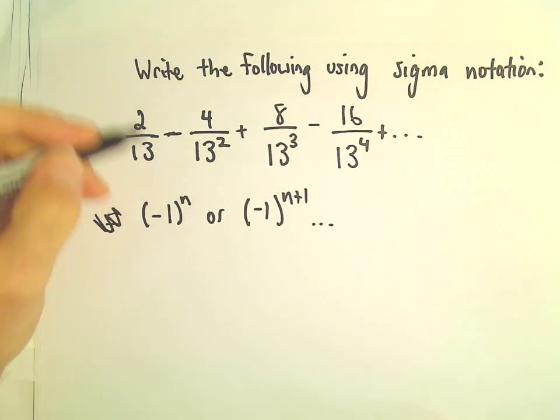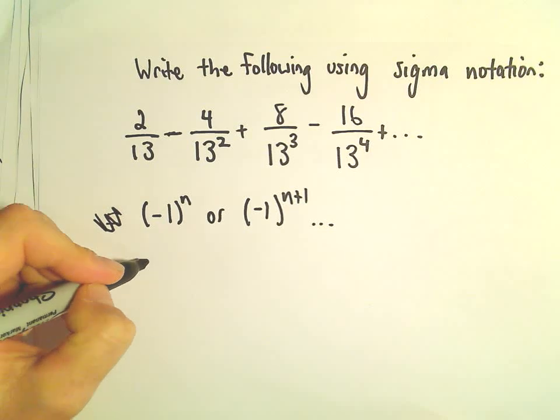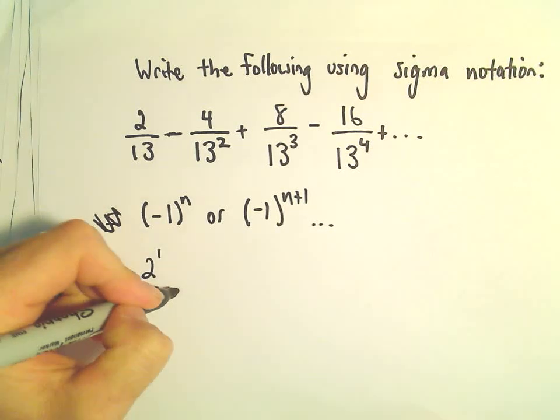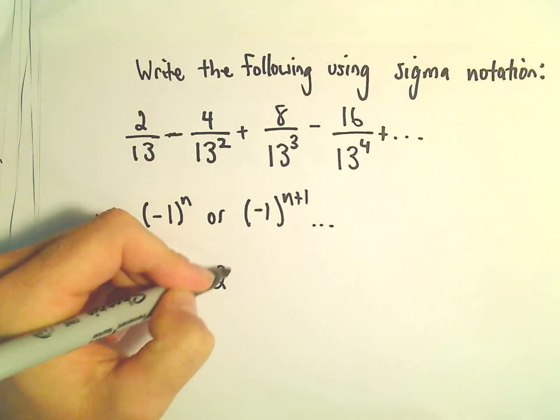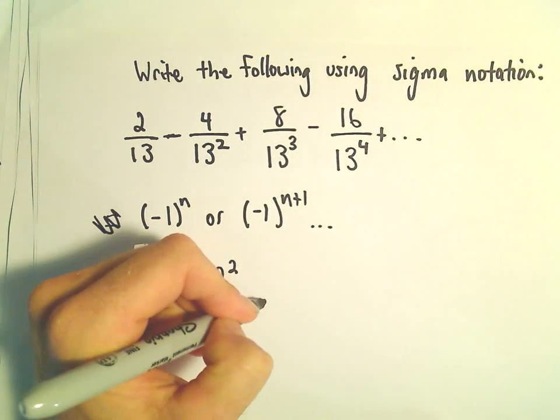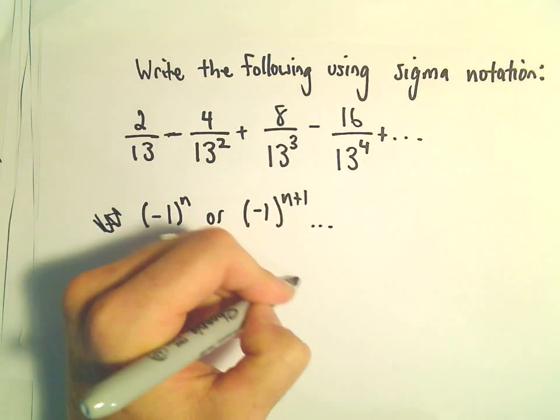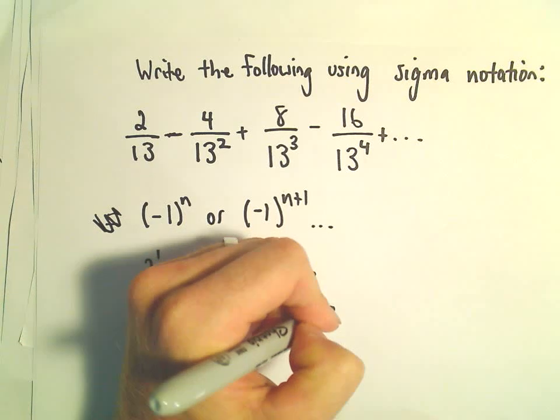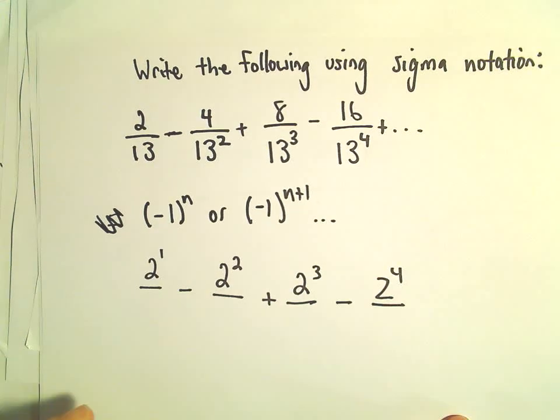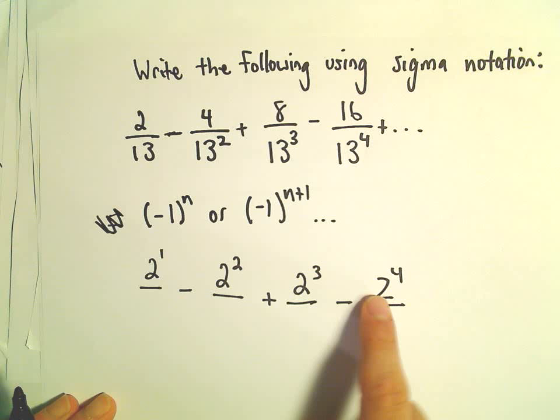I notice that, and then I think about the numbers on top. We've got 2¹. Well, 4, that's really just 2². Then we've got 8, which is 2³. And then 16, which is 2⁴. So I'm seeing really powers of 2 on top.